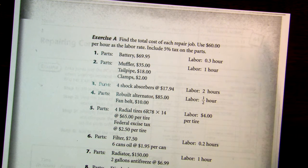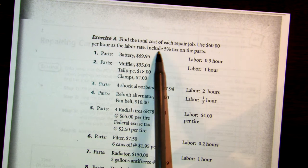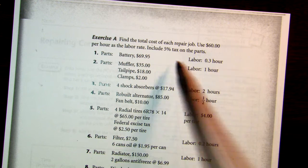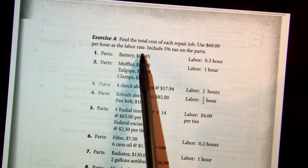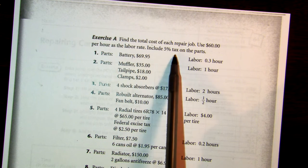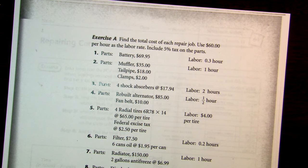In Exercise A, it says find the total cost of each repair job. Use $60 per hour as a labor rate. Include 5% tax on the parts — so it's tax on the parts, not on the labor.